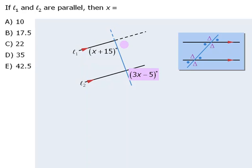So since one angle is 3x minus 5 degrees, the other angle must be 3x minus 5 degrees as well.